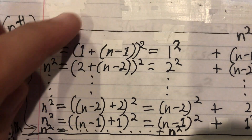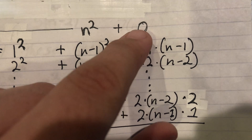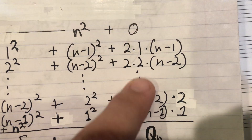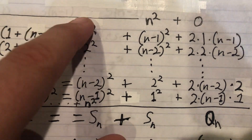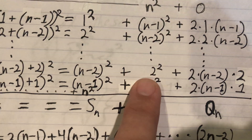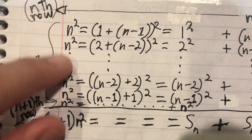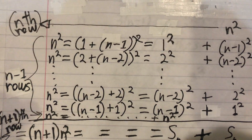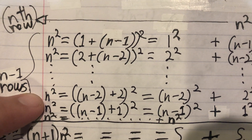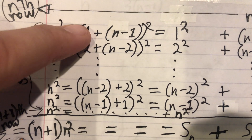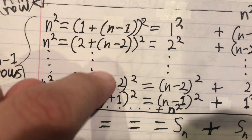There should be an n squared right here. We're going to add up the last part — all the outers and inners from the FOIL formula — and we'll call that Q sub n. This first column gives us what we're looking for, the second column gives us what we're looking for. For how many n's are here: when doing math like this, use what you already have. We put a one next to this, two — we already have it numbered.